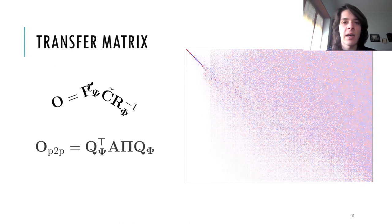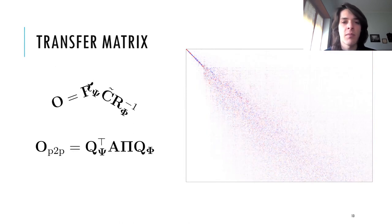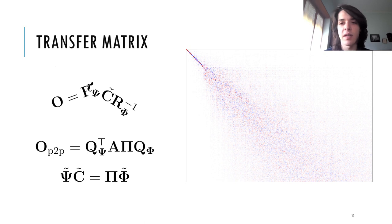So we need to rely on point-to-point maps induced by a nearest neighbor search in the space of the eigenproducts to build our transfer matrix.